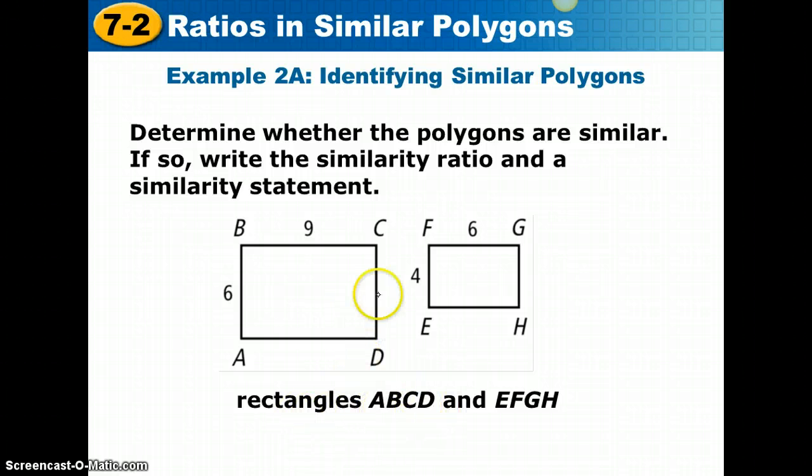We have rectangles ABCD and EFGH. Those letters are going to be important. AB would correspond to EF, BC corresponds to FG, and so on and so forth. They are rectangles.